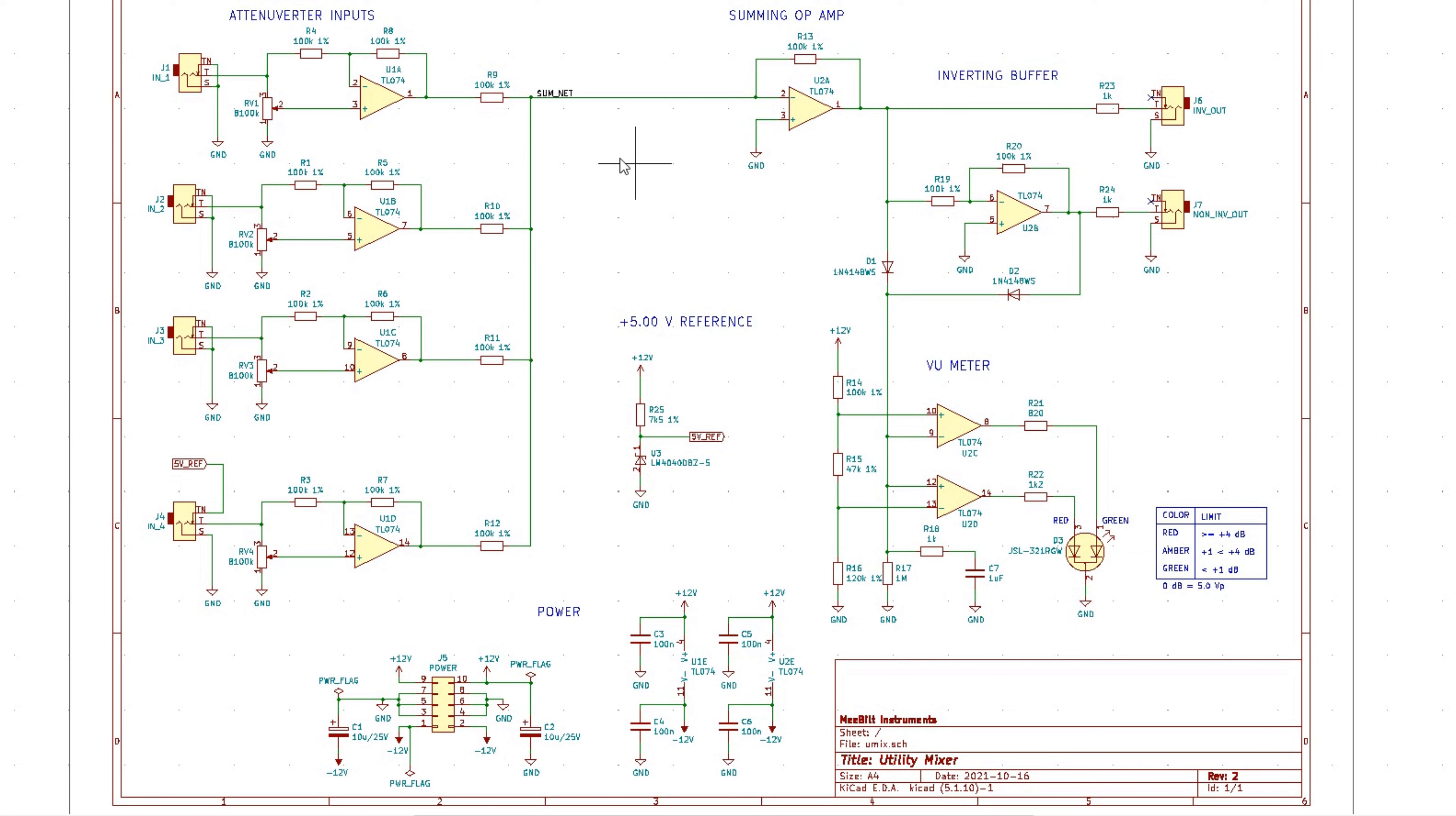Okay, so there are a couple of things to notice. If you plan to build this then I highly recommend that you use 1% resistors just to get the best possible precision in the attenuverter. And you want to be as close as possible to unity gain here for this to work.